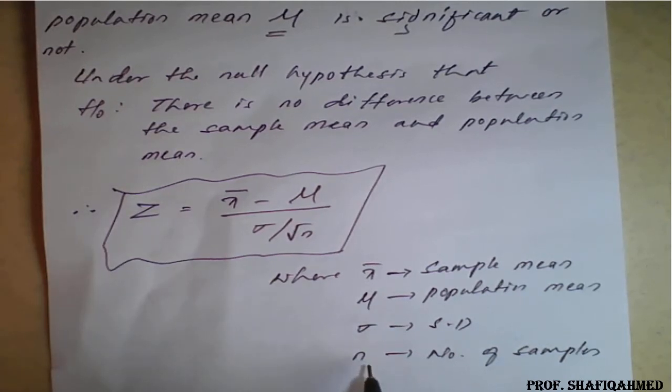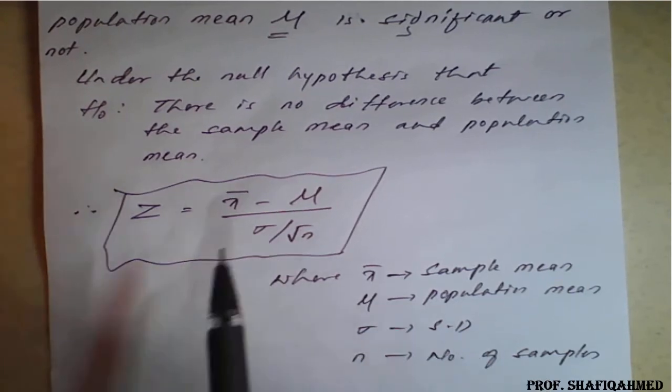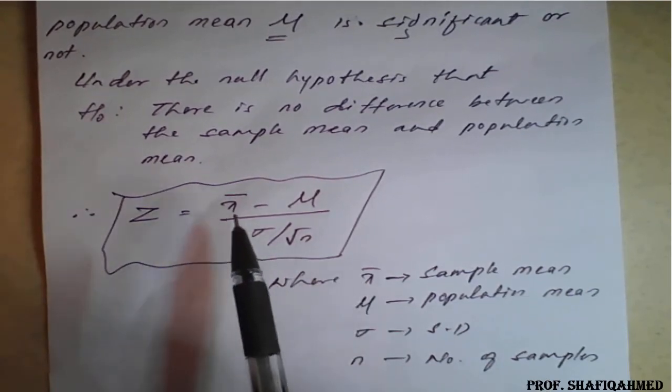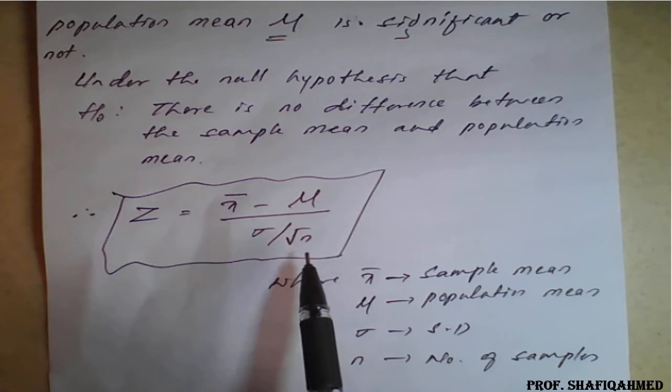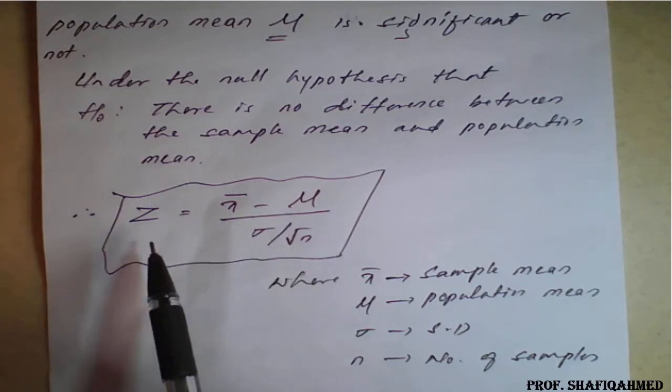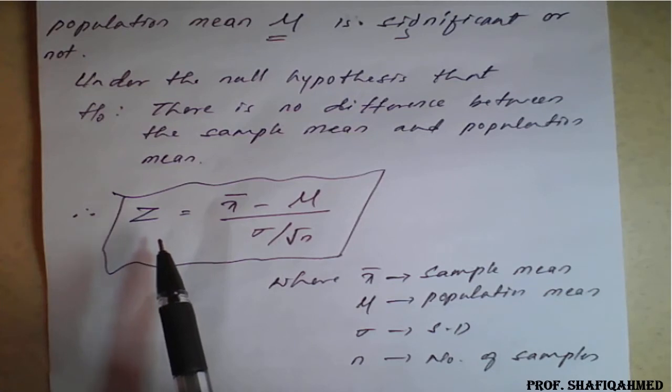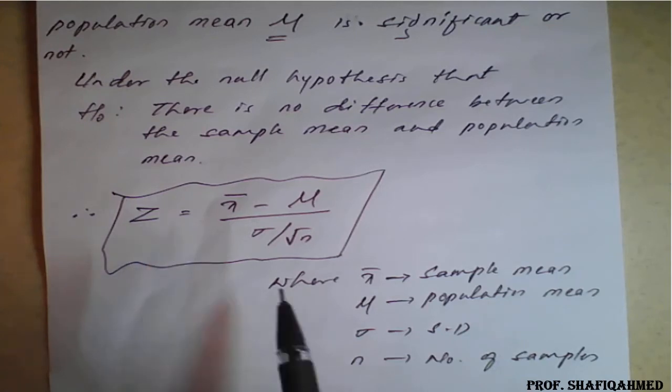Here, small n belongs to the number of samples. With the help of this x̄, μ, standard deviation and n, we will find the value of z and this z value will compare with z alpha. Z alpha is nothing but our critical values, that is level of significance what we have seen in the previous lecture in the form of table.